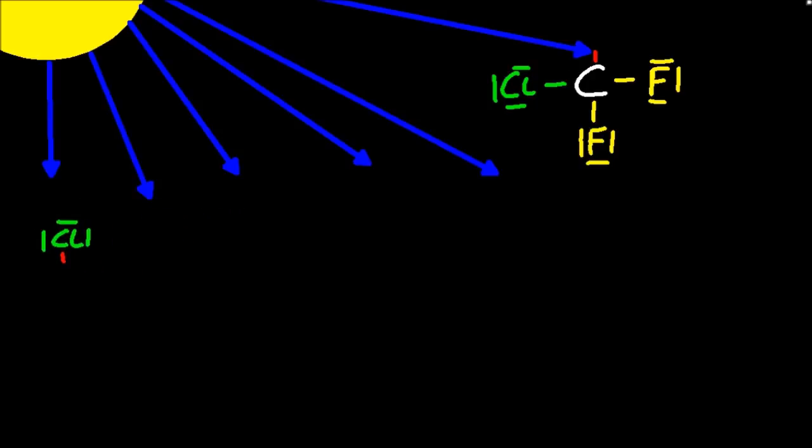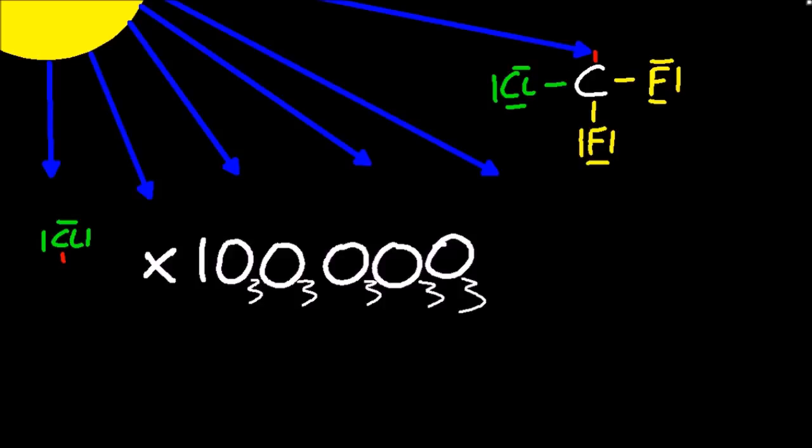That seemed to destroy a lot. How many do you think it destroys? Ten? A hundred? A thousand? Ten thousand? A hundred thousand? For every chlorine radical, a hundred thousand ozone molecules are destroyed.